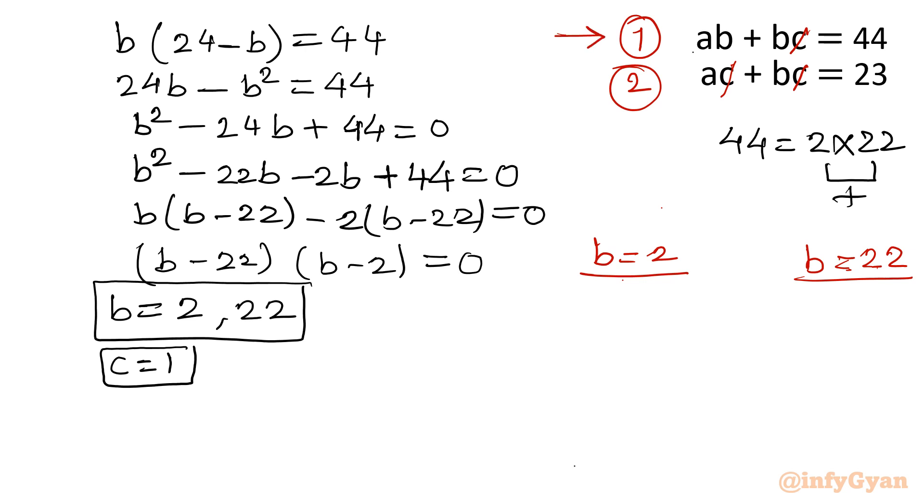So b equal to 2. Put there. A we are calculating. So 2a plus 2 equal to 44. I have substituted b equal to 2 in equation 1. C is 1. So 2a will be equal to 42. A will be equal to 21. 42 by 2 is 21. So our one set is ready: a, b and c.